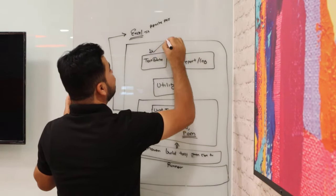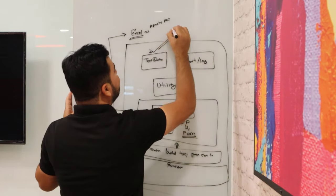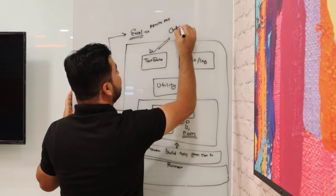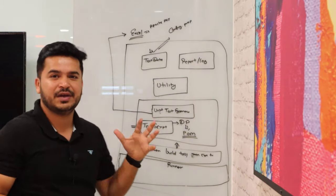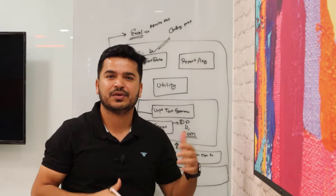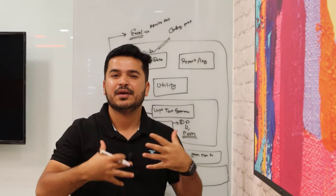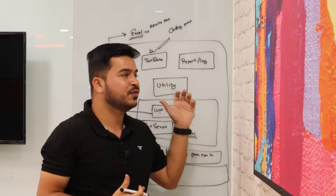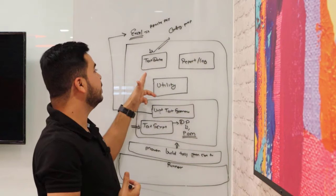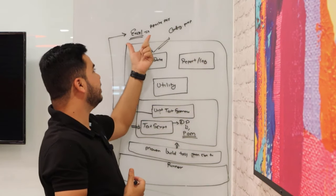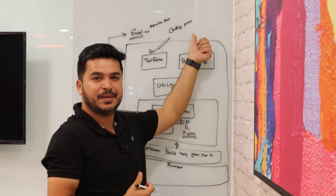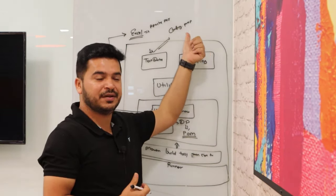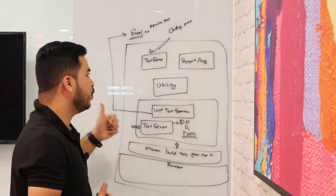You can also mention that we are using a properties file. In the properties file, we maintain all the properties — we can maintain the browser, the URL and other stuff. So you can say in the test data, basically you have two components: one is Excel, and one is a properties file which is maintaining all the properties related to a project.